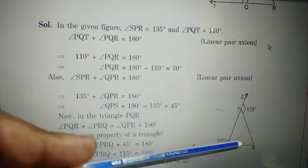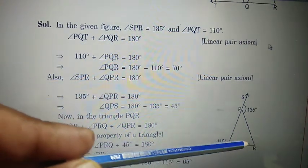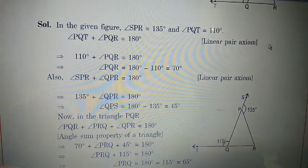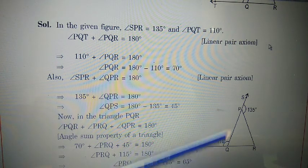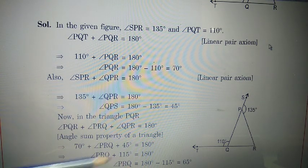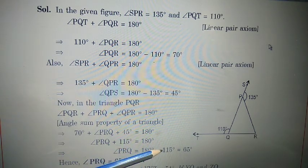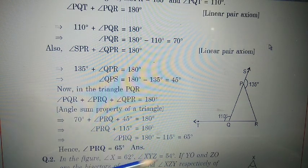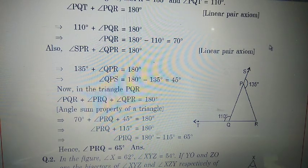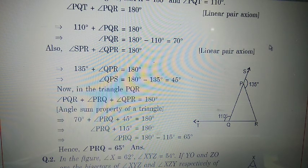By the angle sum property of a triangle, all three angles sum to 180 degrees. We found QPR equals 45 and PQR equals 70, so their sum is 115. Therefore PRQ equals 180 minus 115 equals 65 degrees. So angle PRQ is 65 degrees.